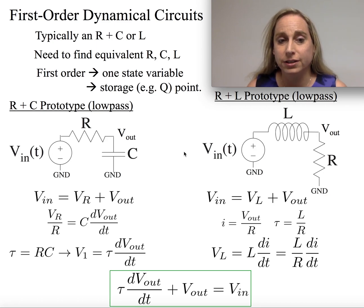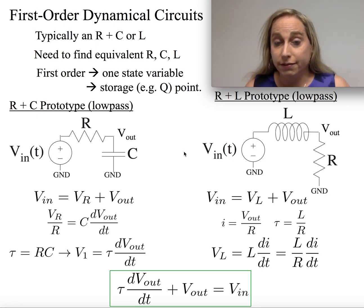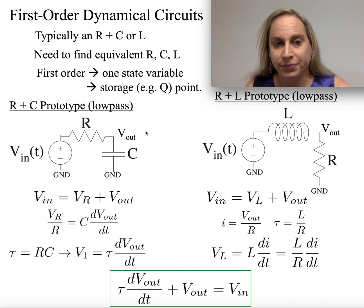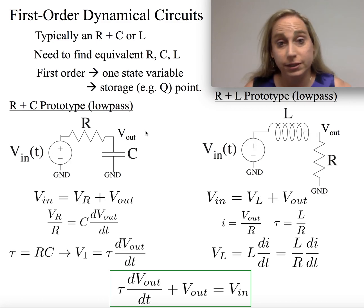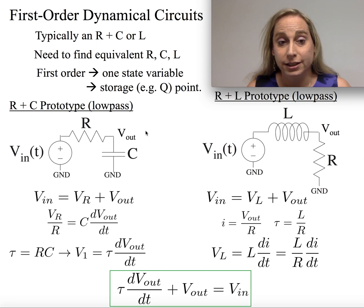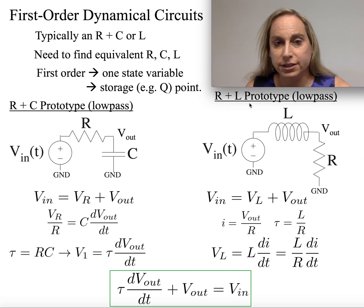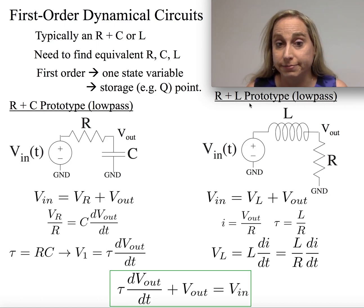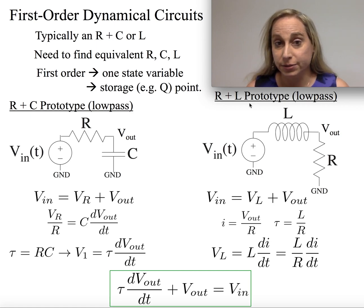Many of these circuits are going to fall into two fundamental prototypes at first order. One is going to be a resistor plus a capacitor, typically in a low-pass type of configuration. We'll talk about what the filtering looks like, but it gives you a first-order behavior. Or it's a resistor plus an inductor — the same type of topology.